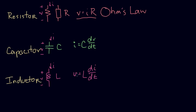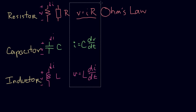So this gives us our three element equations. These are the three equations we'll use when we analyze circuits: V = IR, I = C·dV/dt, and V = L·dI/dt. This is the core of circuit analysis.